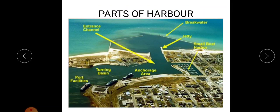This figure shows the different parts of a harbour. This is the breakwater, jetty, entrance channel, anchorage area, turning basin — ships are parked here — and port facilities.